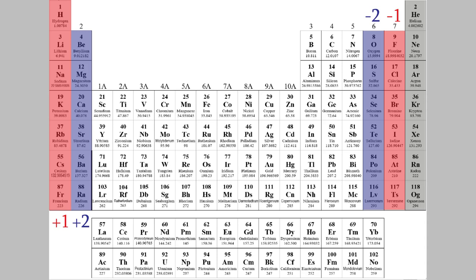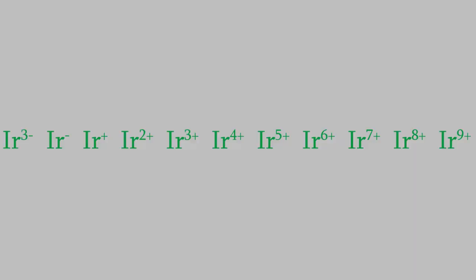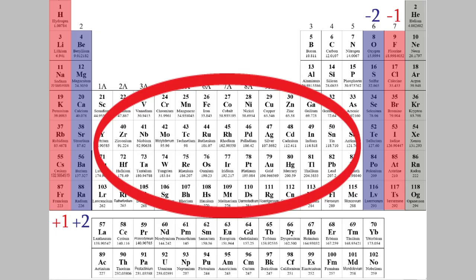We'll talk about the reason for that in a future video. Also, it turns out that lots of the elements in the middle of the periodic table can form ions with lots of different charges. For example, iridium can form 11 different ions. For that reason, it's not possible to come up with a simple rule for the charge on the ions in the middle of the periodic table, like we did for the first two and the last three columns.